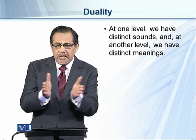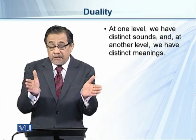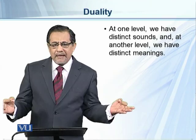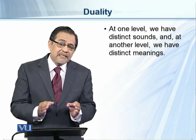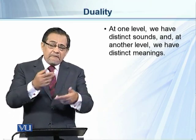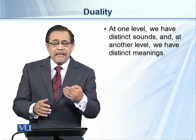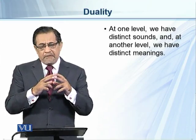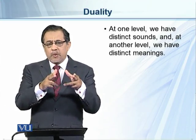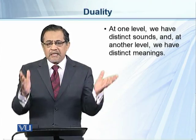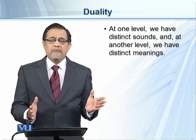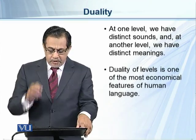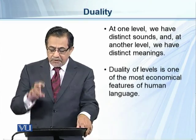But when we use them in combination, in clusters, we get another level which has meaning. For example, if we join these three letters b, u, n and make it 'bun', it becomes a word with a certain meaning. Similarly, if we rearrange these letters we get another word with a meaning. So human language has two levels: at one level, sounds are discrete and have no meaning; at another level, they form groups and these groups have meaning.